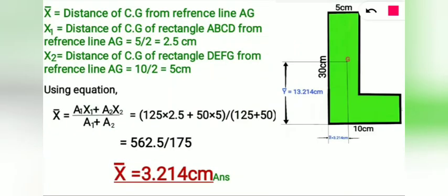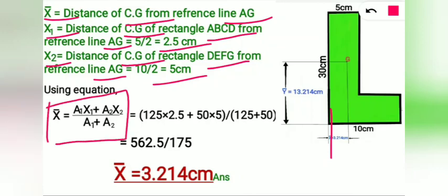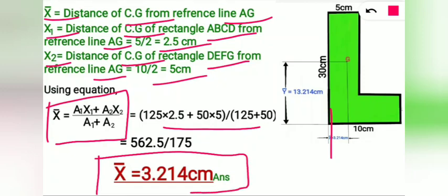Now for the calculation of X bar, we will choose line AG as reference axis. Let X bar be the distance of CG from reference line AG. X1 is the distance of CG of rectangle ABCD from reference line AG, which is equal to 5 divided by 2, giving us the value of 2.5 centimeter. X2 is the distance of CG of rectangle DEFG from reference line AG, which is equal to 5 centimeter. Using the equation for X bar and substituting all the calculated values, we get the value of X bar as 3.214 centimeter.